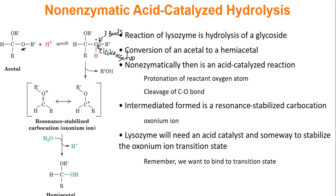That oxygen becomes protonated and has three bonds to it, which is incredibly unfavorable. This oxygen has now become positively charged. Oxygen is a very electronegative atom, so having it be positively charged is energetically unfavorable, and the oxygen wants to alleviate that. So the ROH group is going to be removed so that our oxygen now has two bonds again.